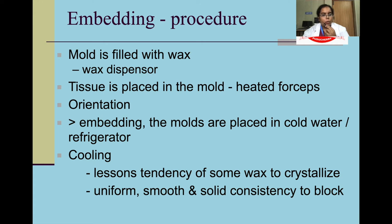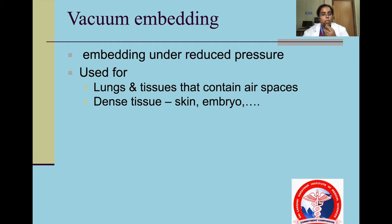The procedure: the mold is filled with wax, tissue is placed in the mold with the help of heated forceps, oriented and then placed over cold water or in a refrigerator. Cooling lessens the tendency of some waxes to crystallize and gives a uniform, smooth and solid consistency to the block. Vacuum embedding is done under reduced pressure and is used for lungs, tissue containing air spaces, and dense tissue like skin and embryo.